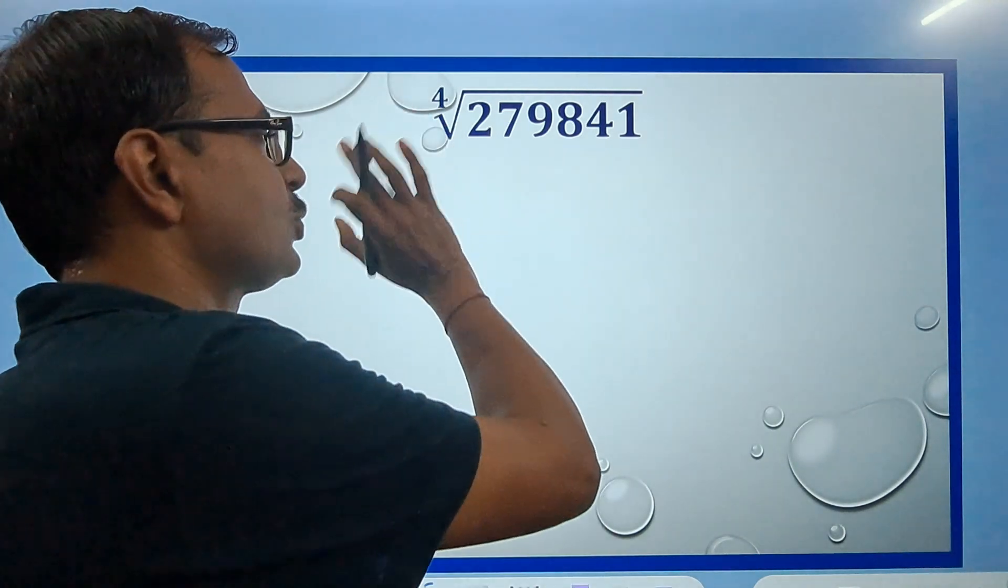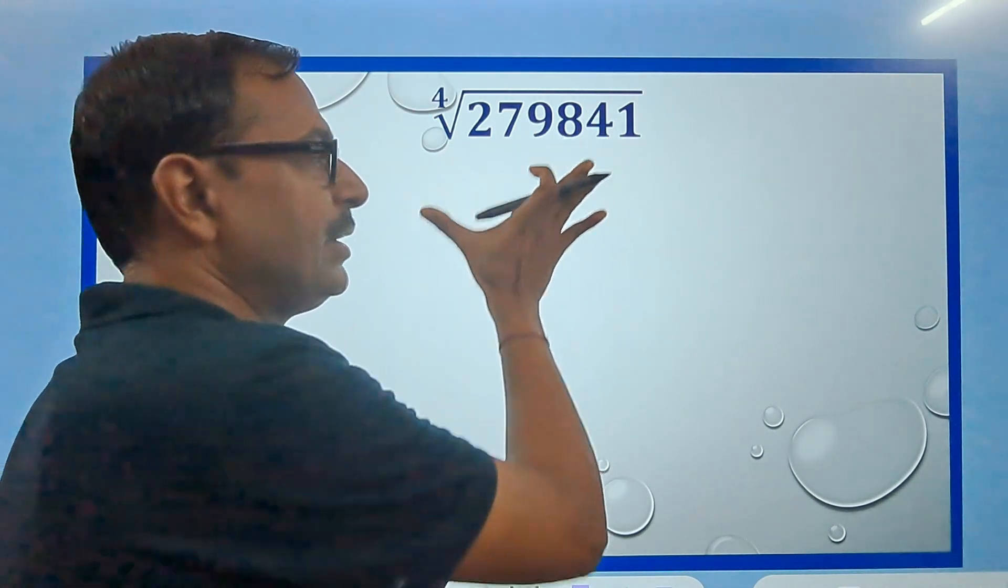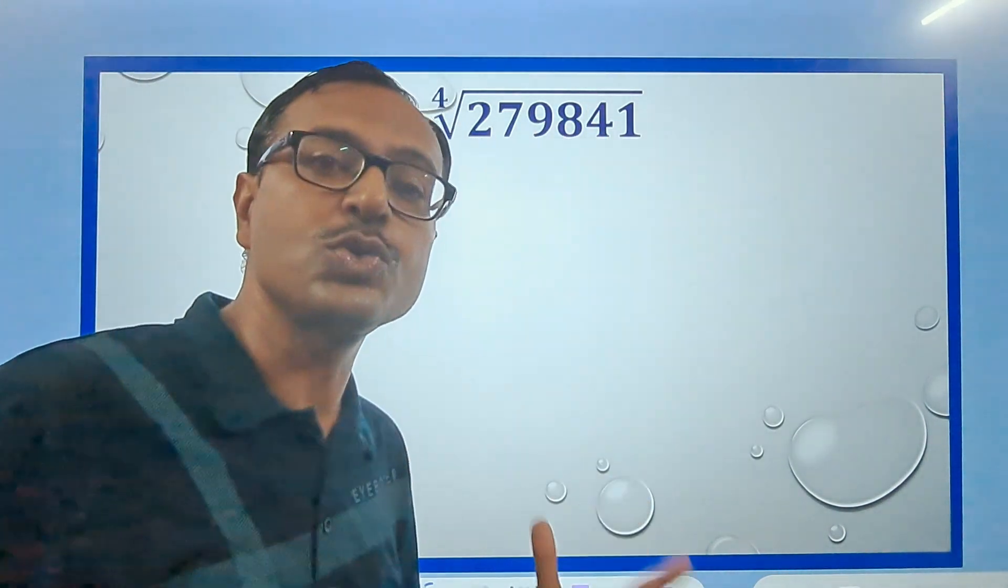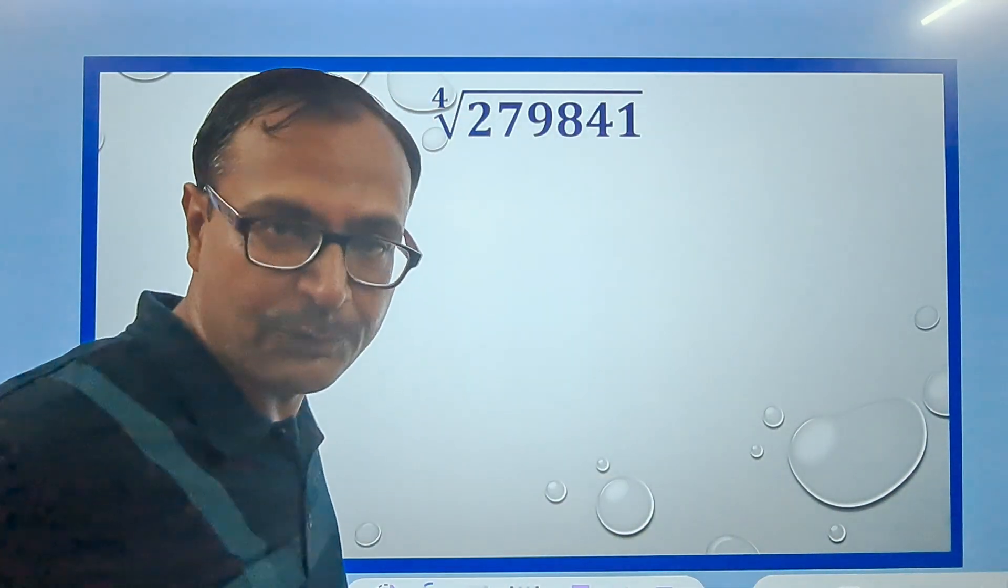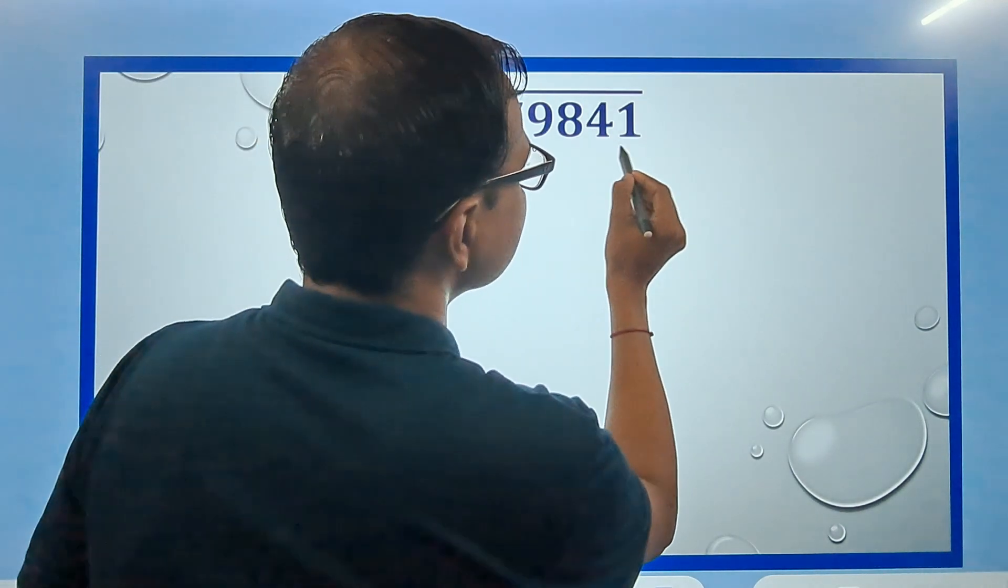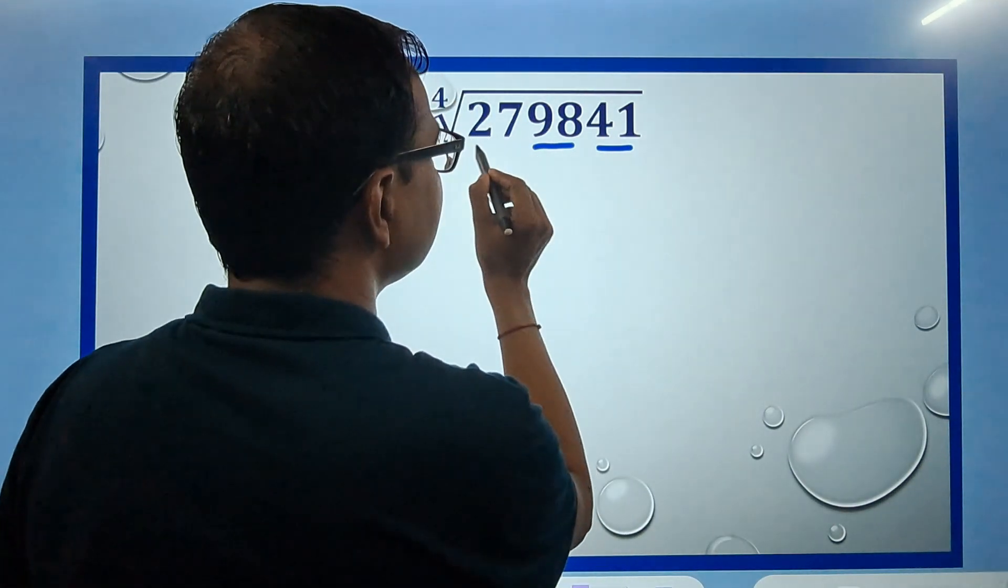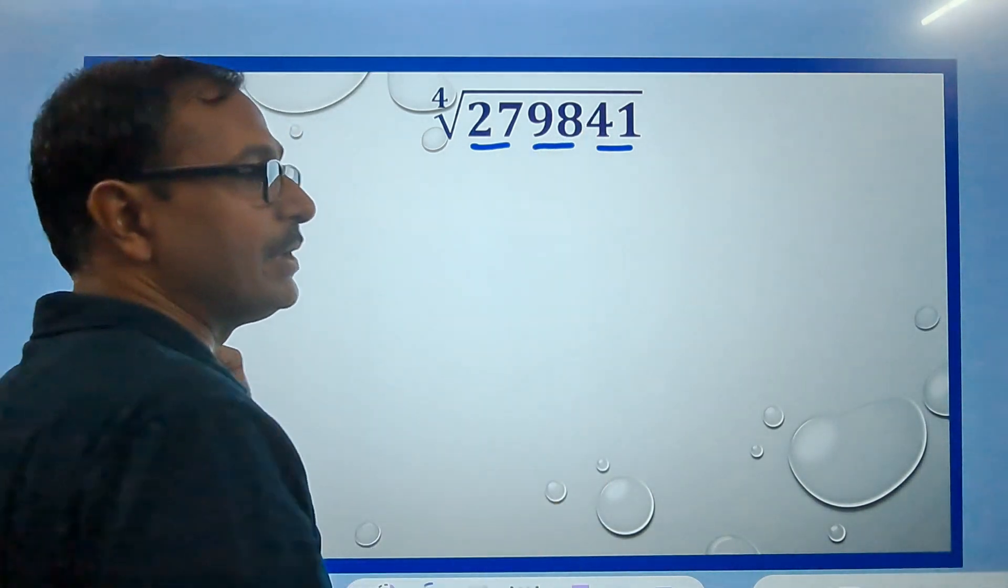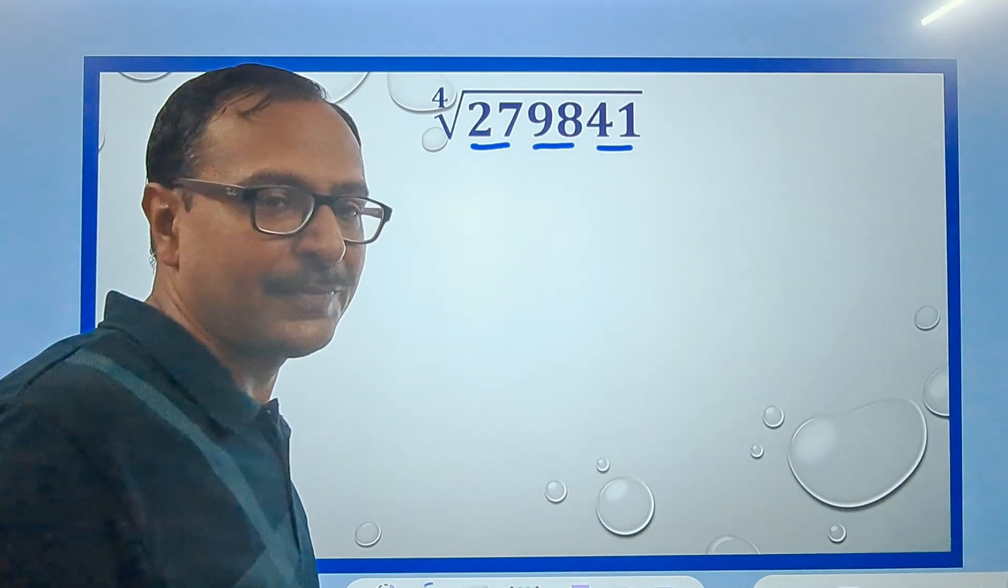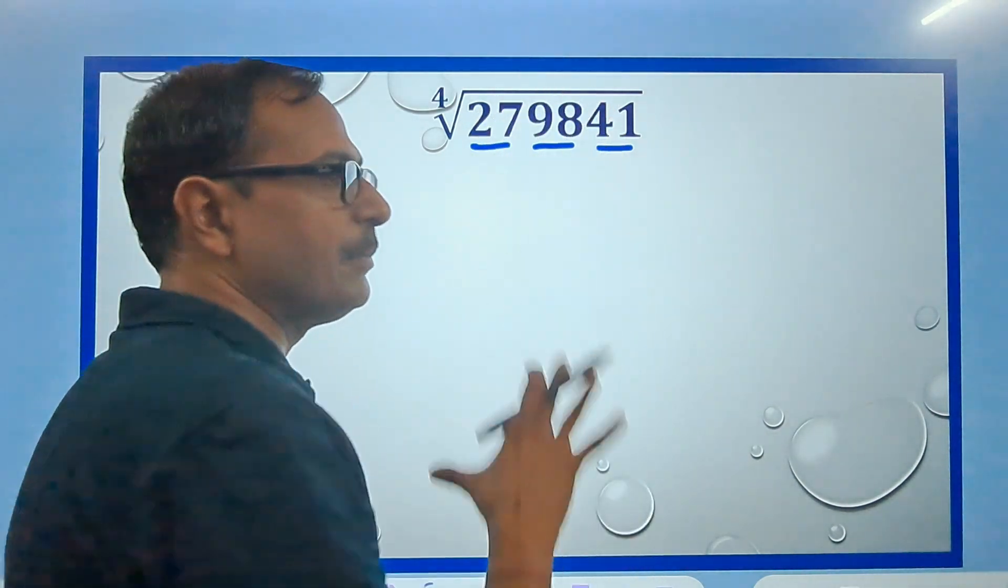So fourth root means this number has to be a perfect square first. And to find which number squared is 279841, I will make pairs of this number from the right-hand side like this. Since I have three pairs, so the square root of this number is a three-digit number. I need to find that number first.